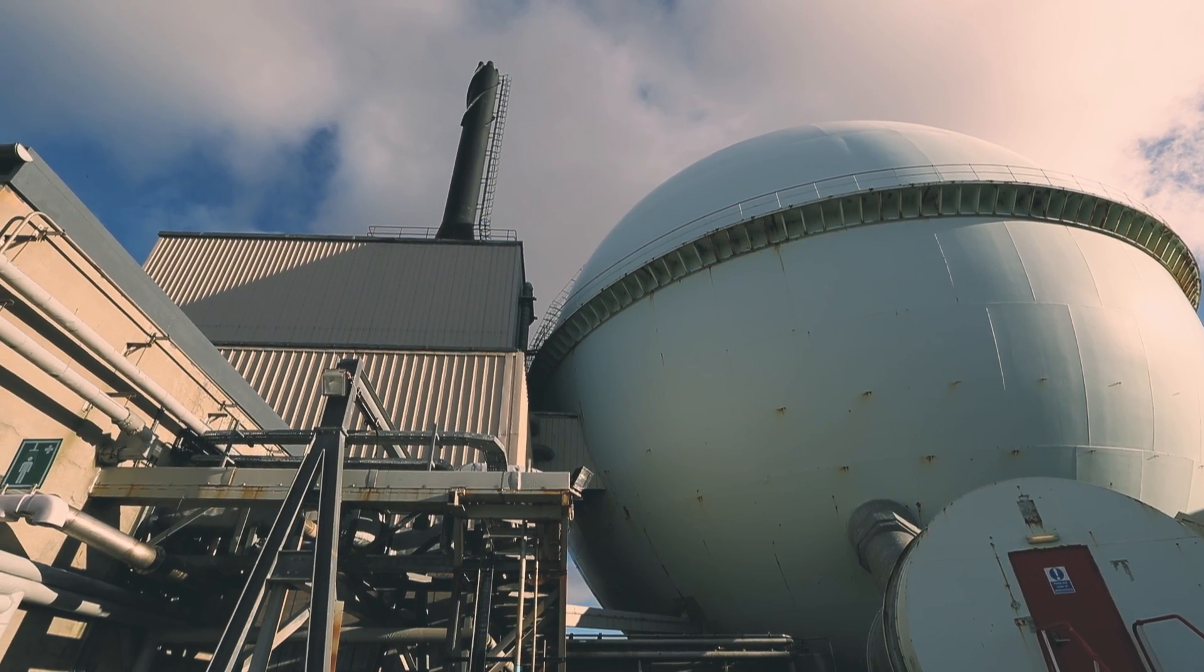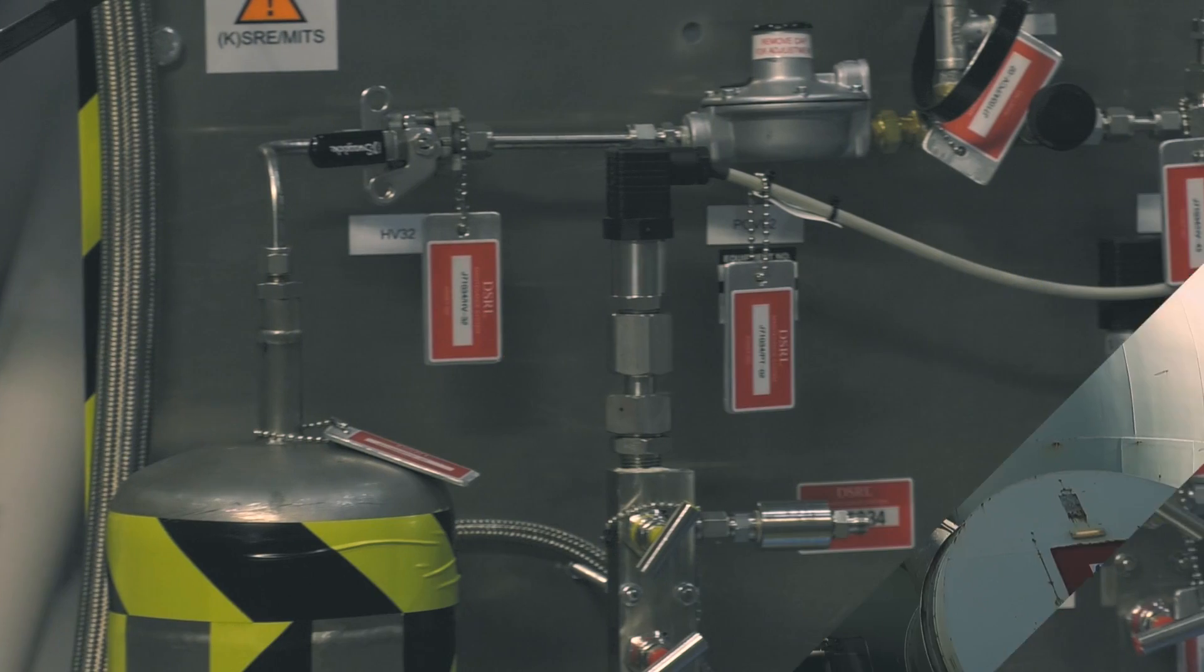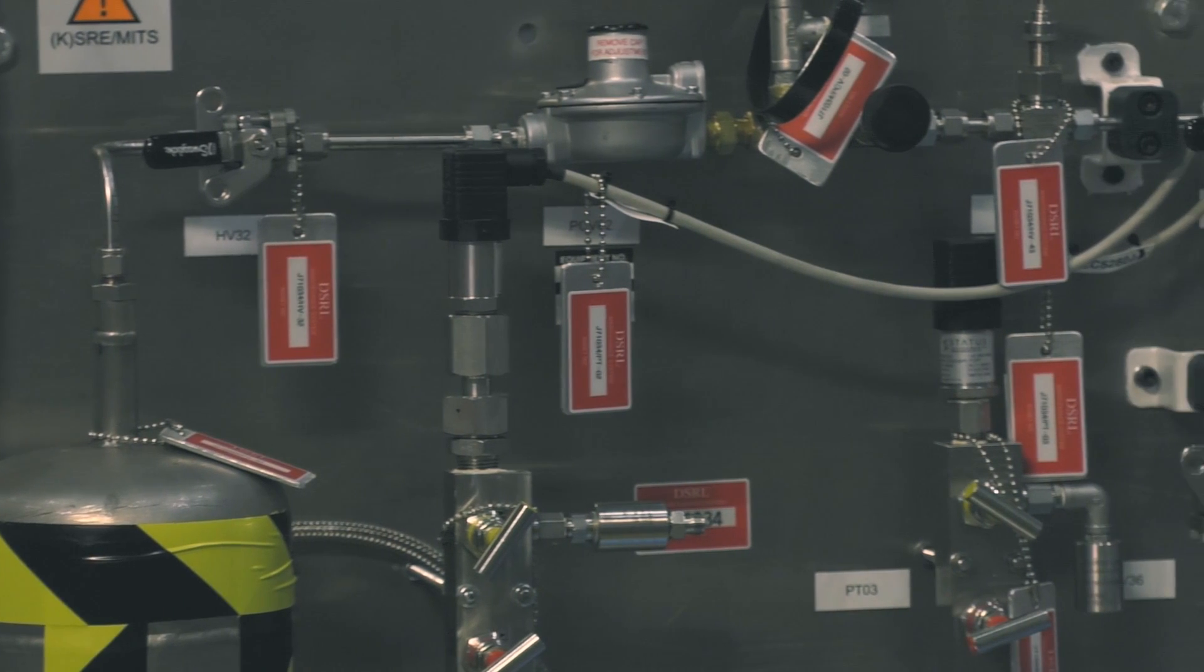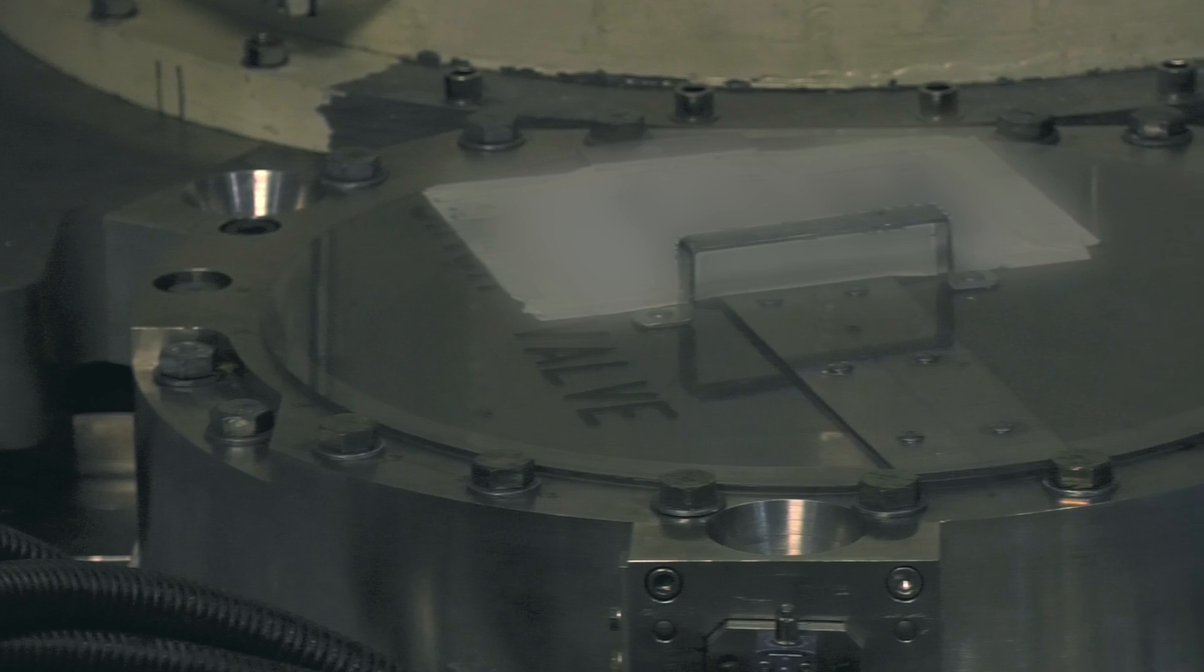Doonray was the site of the development of the fast reactors for the UK. Decommissioning really only started on this reactor as the site was taken over by the NDA in the mid 2000s.